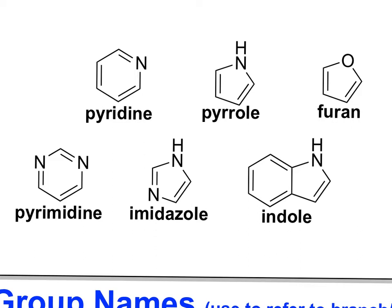We'll get into more details about how to classify these as aromatic molecules later in the chapter. For now, you need to be familiar with these names: pyridine, pyrimidine, pyrrole, imidazole, furan, and indole. These are all representative common heterocyclic aromatic compounds.